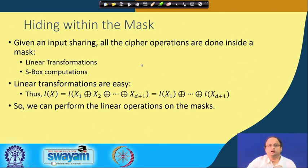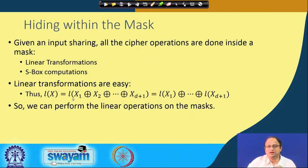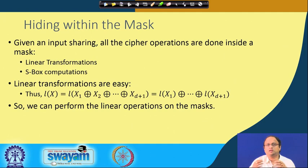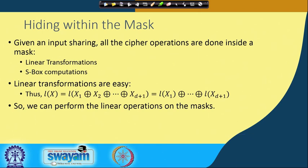Now we would like to see how we can apply masking to ciphers. Ciphers typically have two types of transformations: linear transformations and non-linear transformations. For linear transformations, masking is very easy, because if I break x into shares x1 through x_{d+1}, then by linearity L(x1 XOR ... XOR x_{d+1}) = L(x1) XOR L(x2) XOR ... XOR L(x_{d+1}). So you can perform the linear operations on each share separately and combine the results to get the correct output.